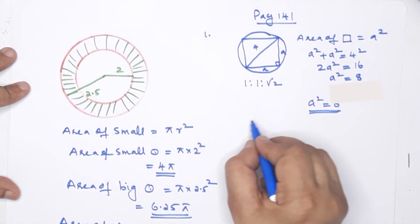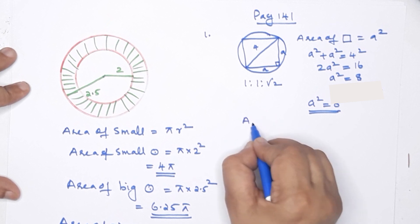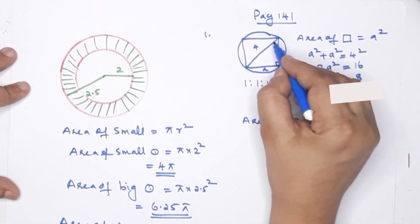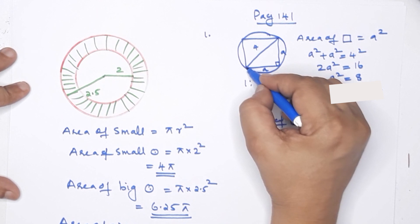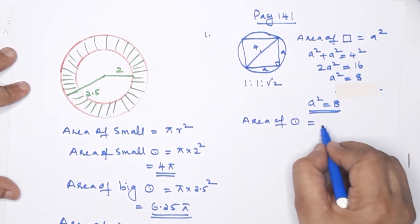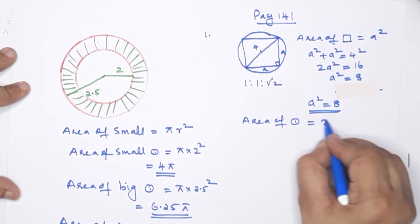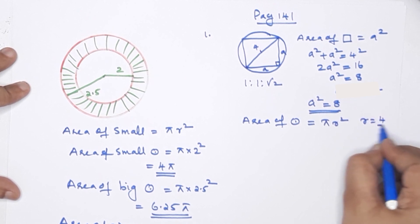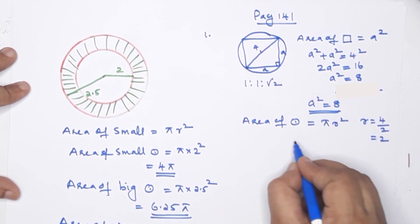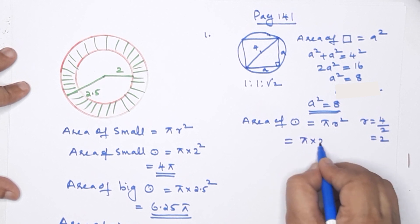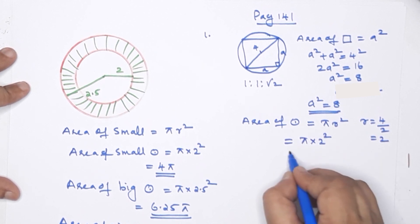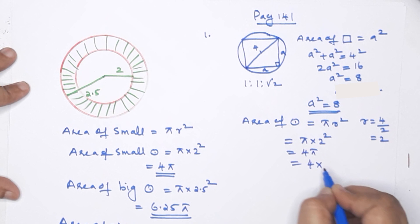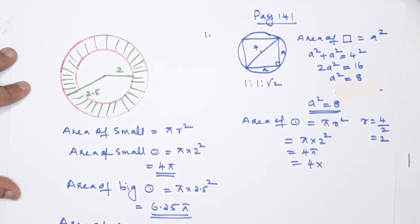Now for the area of the circle: the diameter equals 4, so the radius is 4/2 = 2. Area of circle = πr² = π × 2² = 4π.